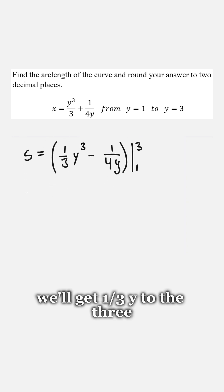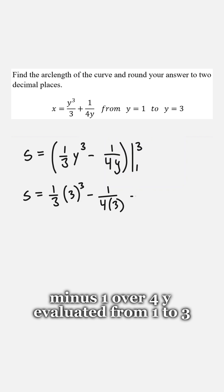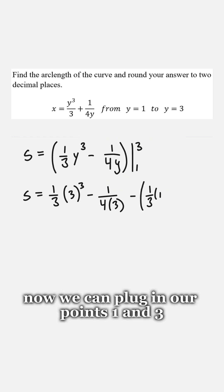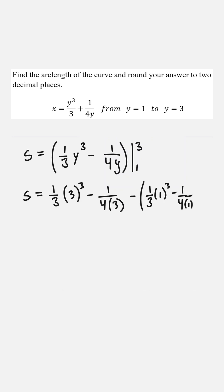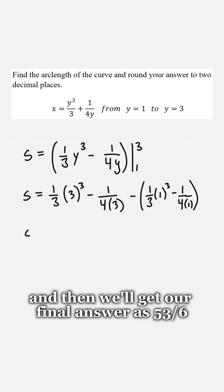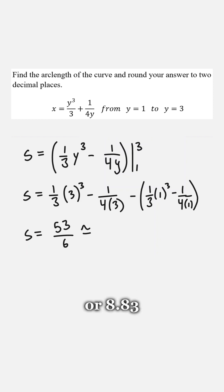So once we integrate that, we'll get 1 third y to the 3 minus 1 over 4 y evaluated from 1 to 3. Now we can plug in our points, 1 and 3. And then we'll get our final answer as 53 over 6 or 8.83.